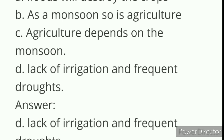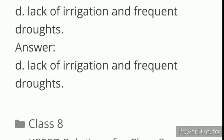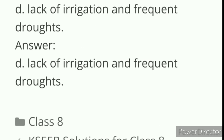Next question: Indian agriculture is a gamble with the monsoons because dash. Options are: floods will destroy the crops, as monsoon so is agriculture, agriculture depends on the monsoon, lack of irrigation and frequent droughts. Answer is: lack of irrigation and frequent droughts.